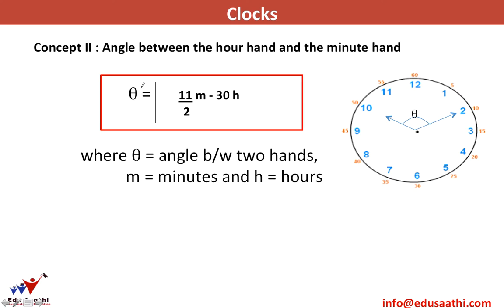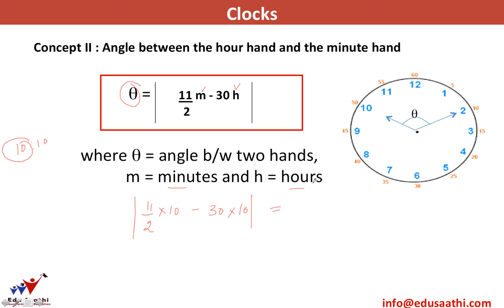The formula is: θ = |11/2 × m − 30h|, where θ is the angle between the two hands, m is the minutes, and h is the hours. For time 10:10, m = 10 and h = 10. So θ = |11/2 × 10 − 30 × 10| = |55 − 300| = |−245| = 245 degrees. The hours must always be in 12-hour format.